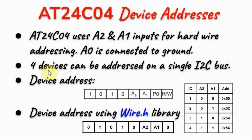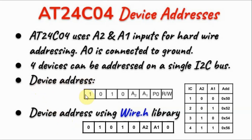As mentioned earlier, 4 devices can be addressed on a single I2C bus, and this can be achieved by hardwiring pins A2 and A1 of the EEPROM to give us 4 device addresses. A0 is logic don't care, so it is connected to ground. To generate the device address, we need to construct this byte where the most significant nibble is fixed at this value. A2 and A1 have values based on this truth table, and A0 has a value of 0.